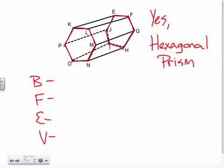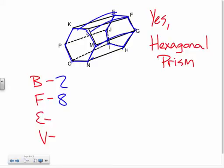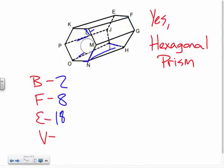For the hexagonal prism: it's a prism so it has 2 bases. Faces: 2 bases plus 6 sides going around the outside = 8 total faces. Edges: 6 on one base plus 6 on the other base = 12, plus 6 lines connecting them = 18 total edges. Vertices: 6 on one end and 6 on the other = 12 total vertices.